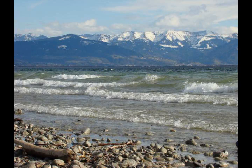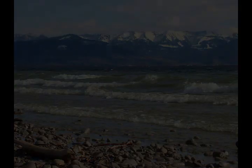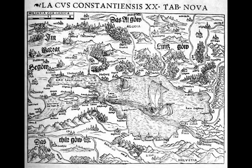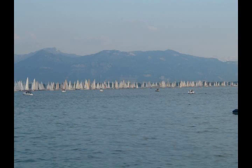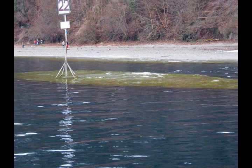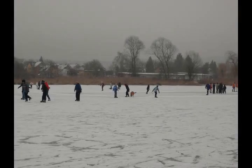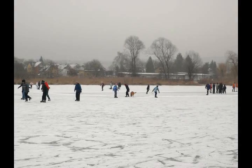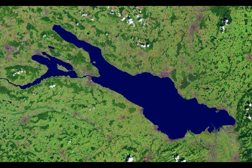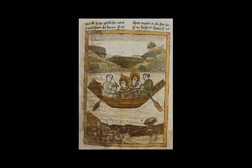The main tributary of Lake Constance is the Alpine Rhine. The Alpine Rhine and the Seerhein do not mix greatly with the waters of the lake and flow through the lakes along courses that change relatively little. The most important tributaries of the Obersee are the Dornbirner Ach, Bregenzer Ach, Leiblach, Argen, Schussen, Rotach, Seefelder Ach, Stockacher Ach, Salmsacher Ach, the Ach near Arbon, Steinach, Goldach, and the Old Rhine. Because the Alpine Rhine brings drift from the mountains and deposits it as sediment, the Bay of Bregenz will silt up in a few centuries.